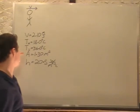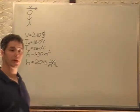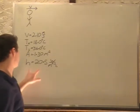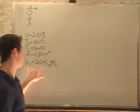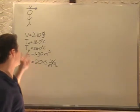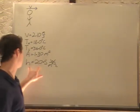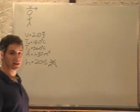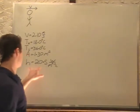He has a skin area of 1.30 square meters and a convective coefficient of 20.5 watts per meter squared per degree Celsius at his speed. So this convective coefficient changes depending on what speed he's going. We're told that it's this.